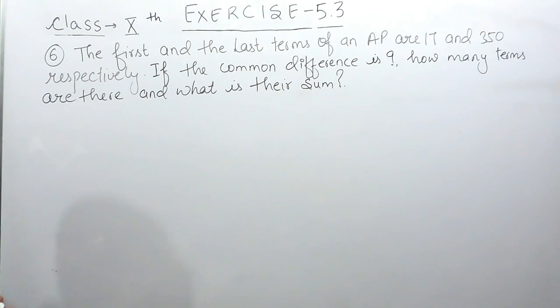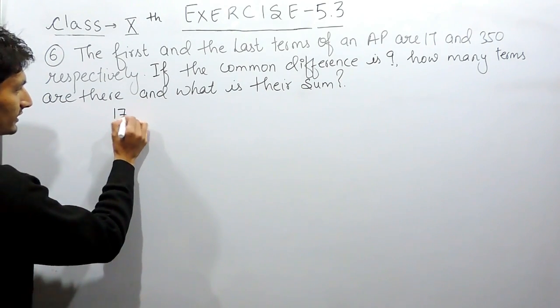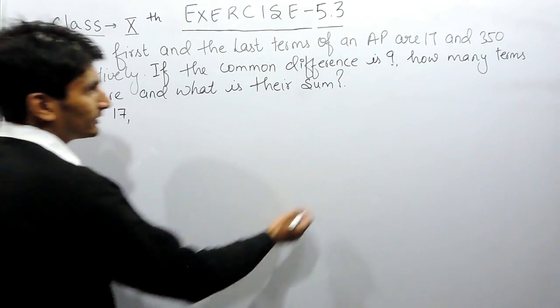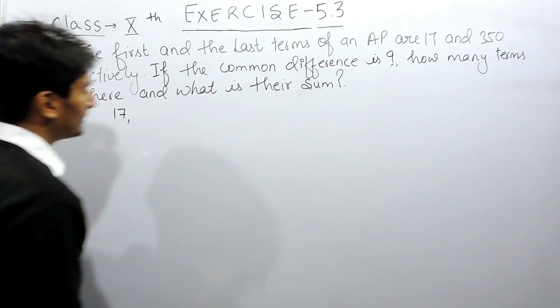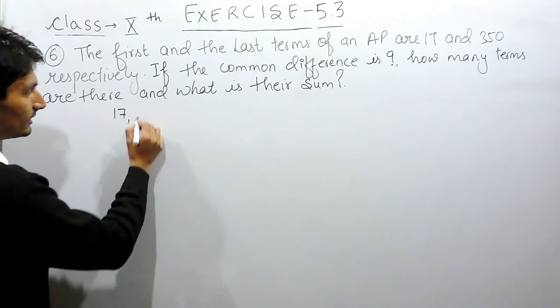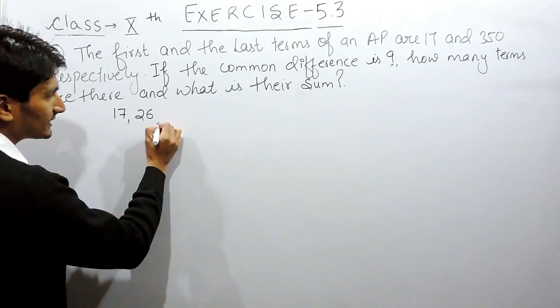So in this case, there is an AP. The first term of this AP is 17, this is given to you, and the common difference is 9, means to find out the second term, you must have added 9 to 17 so the next term must be equal to 26.